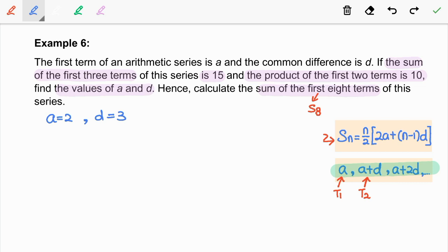Next, let's move on to find the sum of the first 8 terms. We are going to substitute the values of A, D, and N into the Sn formula. So we have 8 over 2, 2 times 2 plus 8 minus 1 times 3. By simplifying this, we get the answer equal to 100.